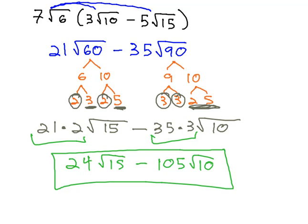Again, multiplying a monomial radical expression by a binomial radical expression is much the same as multiplying monomials and polynomials. We distribute through the parentheses, and then once we've done that, we simplify the radicals.